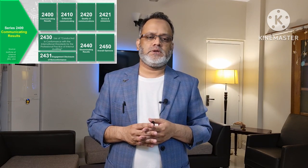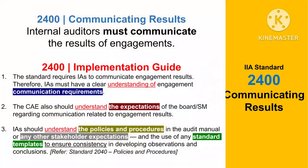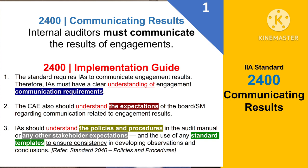Let's start with the first standard of the series, 2400 communicating results. The basic requirement of standard 2400 is that internal auditors must communicate the results of engagement. The implementation guide further elaborates that internal auditors must have a clear understanding of engagement communication requirements. The Chief Audit Executive should also understand the expectations of the board or senior management regarding communication related to engagement results.